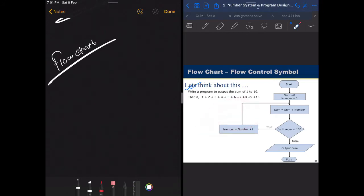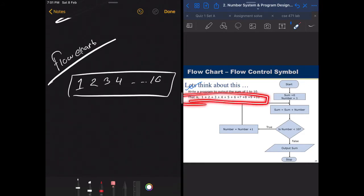The first problem tells us to write a program to output the sum of 1 to 10. So what this is telling us is basically that we need to start from 1 and look into each number: 1, 2, 3, 4 up to 10, and then sum all of them up and return the sum value.